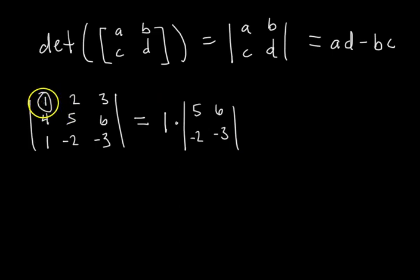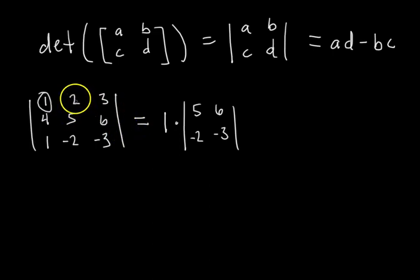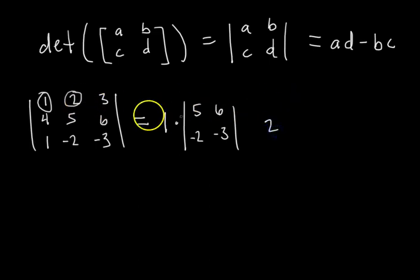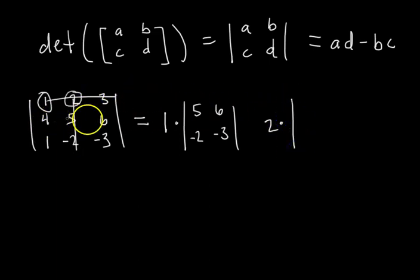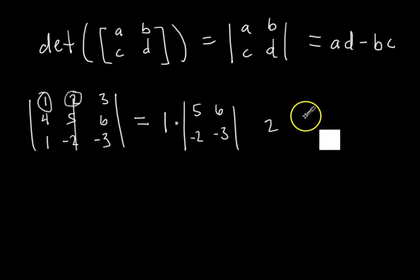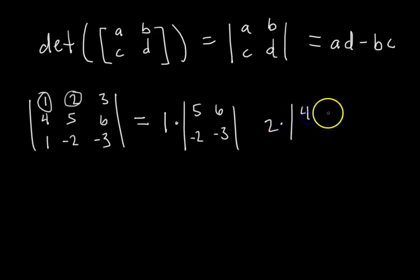We're cofactor expanding along the first row, so there will be 3 terms in the expression for the final determinant. For the second term, we work with the 2. We cross out the row and column we're working with, then multiply by the determinant of what's left, which is the 2x2 matrix with entries 4, 6, 1, −3. So the second term involves 2 times the determinant of that minor.